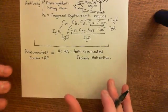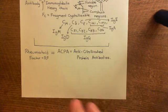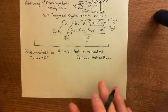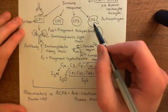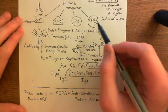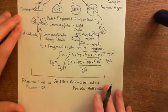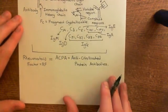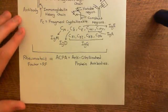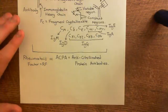The reason that these anti-citrullinated protein antibodies — and we said that we were going to use citrullinated protein 4 as our example of a protein present within the synovial membrane — the reason that the presence of these antibodies in the blood doesn't initially cause any disease is because they can't get out of the blood and into the interstitial fluid of the synovium.